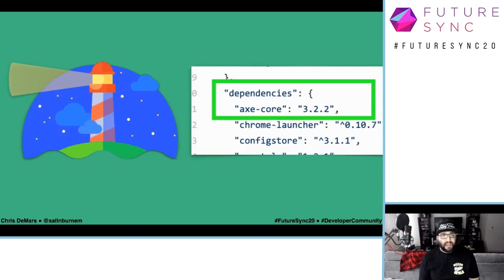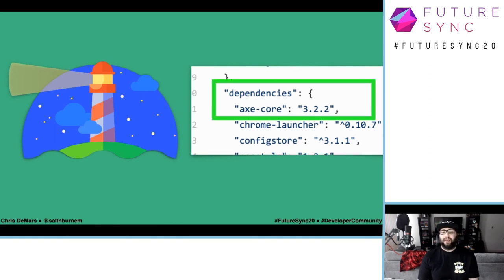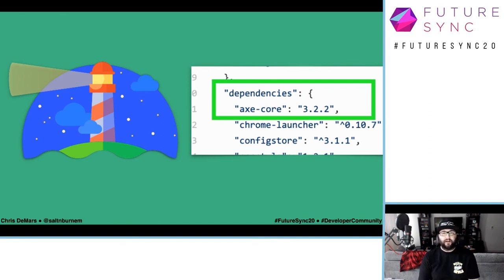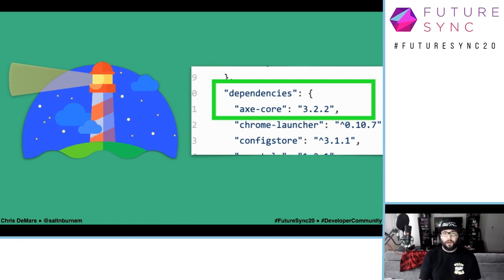Another tool I use side-by-side with Axe Core is Lighthouse, which is in the browser dev tools. You can run an accessibility audit — it uses Axe Core under the hood and gives you a score out of 100. The higher the Lighthouse score, the better. But these tools are only going to catch between 20% to 50% of all accessibility errors. The only way to catch everything is through manual testing. So run these tools, but also do manual testing — use a screen reader, use just the keyboard alone.